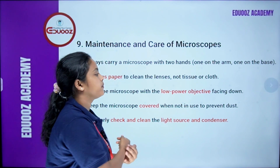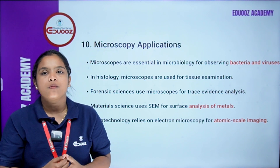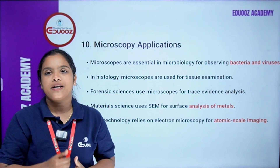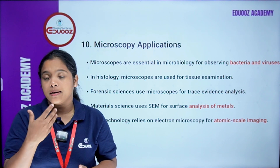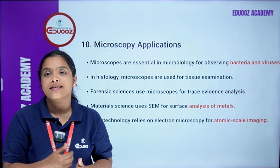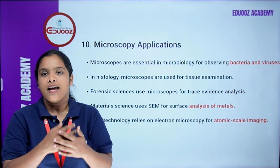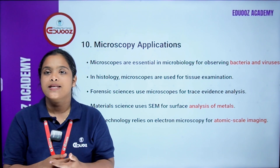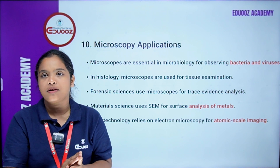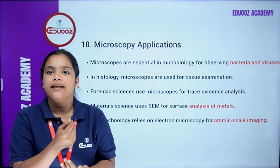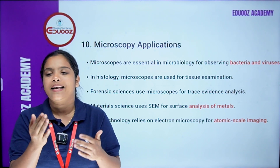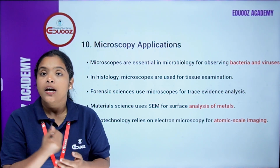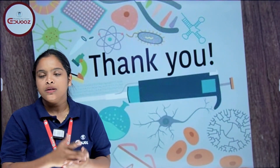Applications of microscopy: Microscopes are essential in microbiology for observing bacteria and viruses, and in histology for tissue examination. Forensic science uses microscopes for trace evidence analysis. Material science uses SEM for surface analysis of metals. Nanotechnology relies on electron microscopy for atomic-scale imaging.